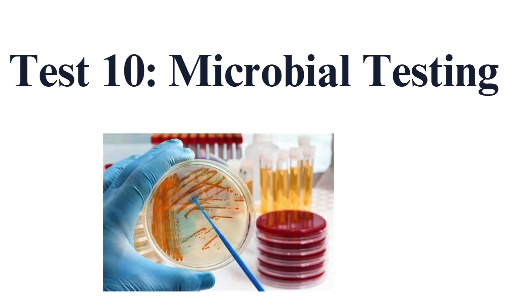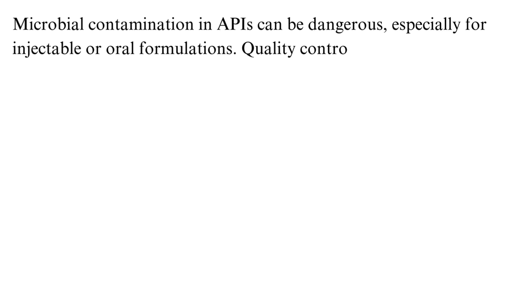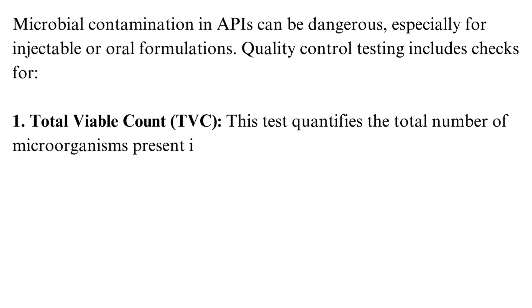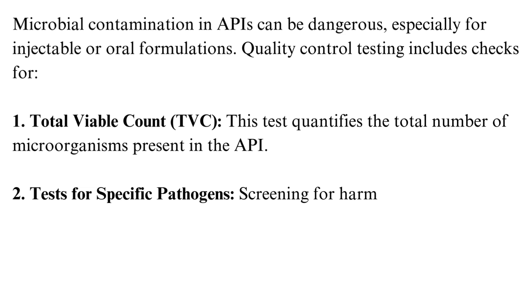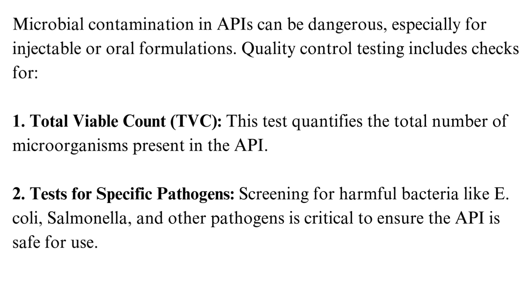Test 10: Microbial Testing. Microbial contamination in APIs can be dangerous, especially for injectable or oral formulations. Quality control testing includes checks for total viable count, which quantifies the total number of microorganisms present in the API, and tests for specific pathogens — screening for harmful bacteria like E. coli, Salmonella, and other pathogens is critical to ensure the API is safe for use.